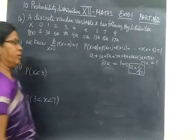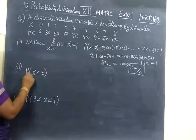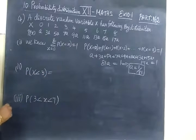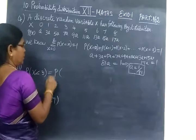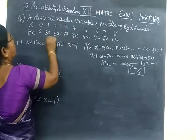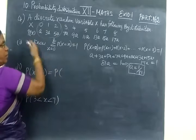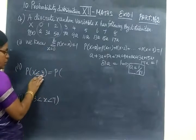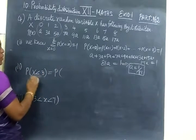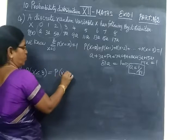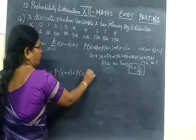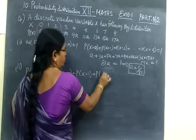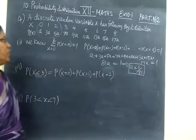So we have found the value of A. Now P of X less than 3. P of X less than 3 means less than 3, you are selecting this one. It is given less than 3. So P of X equal to 0 plus P of X equal to 1 plus P of X equal to 2.